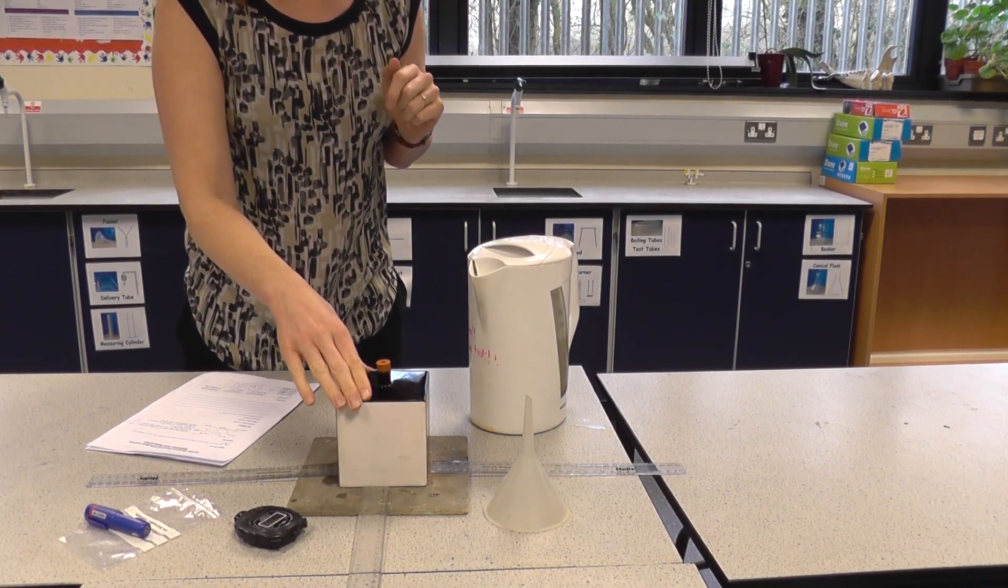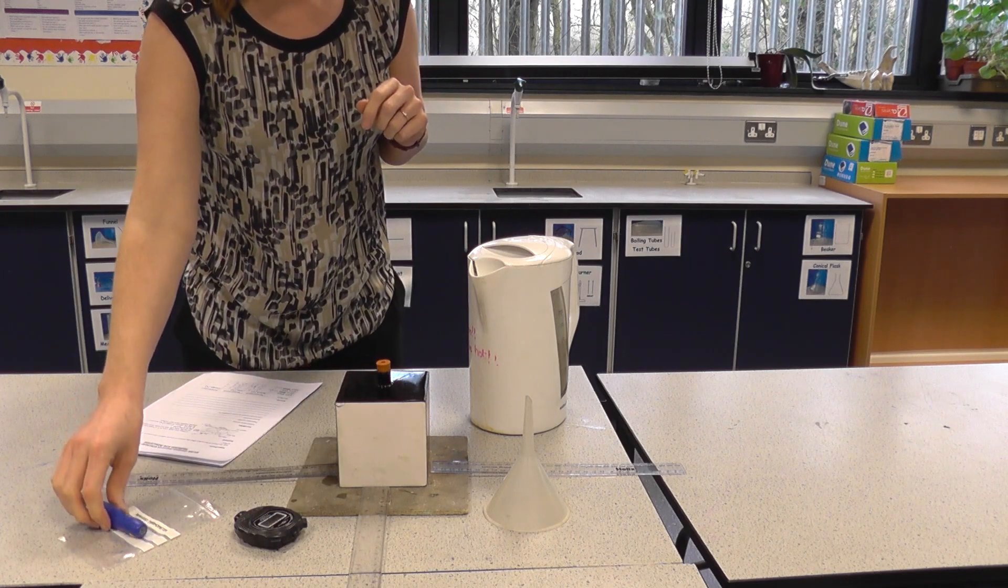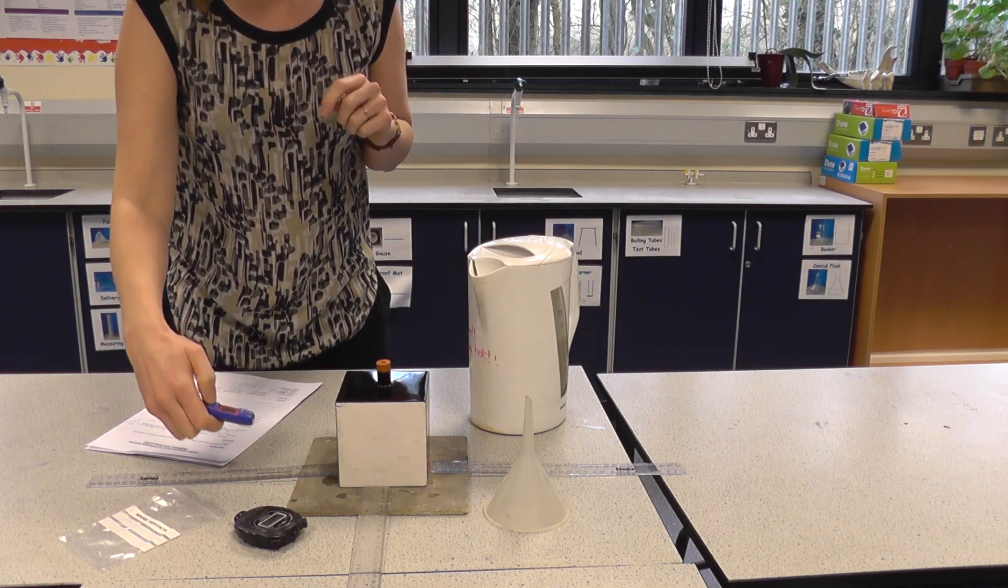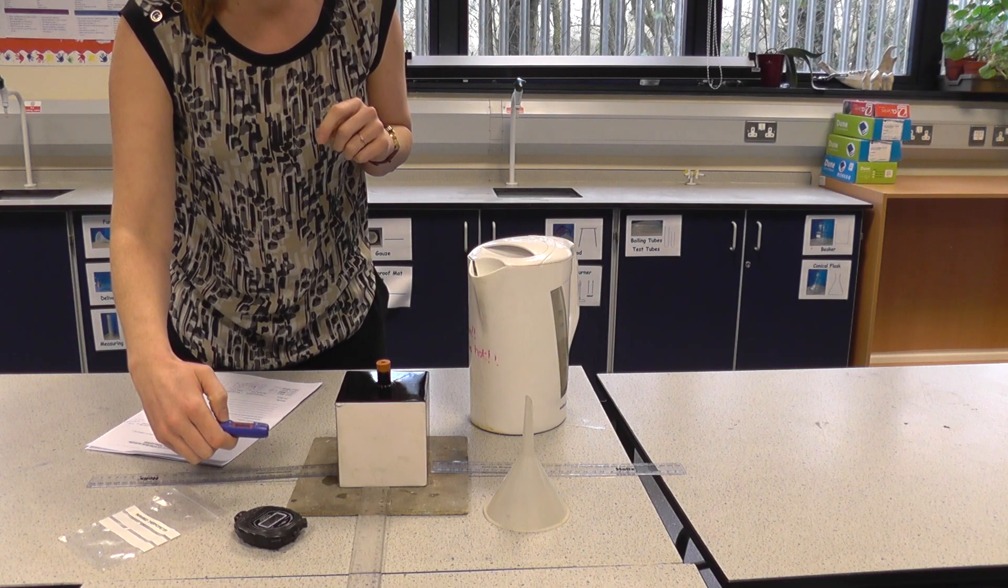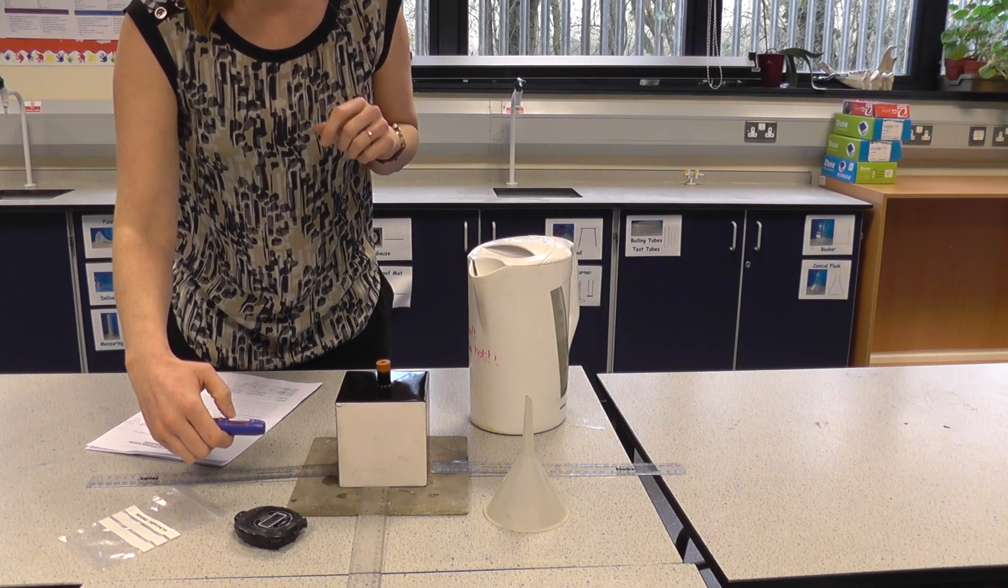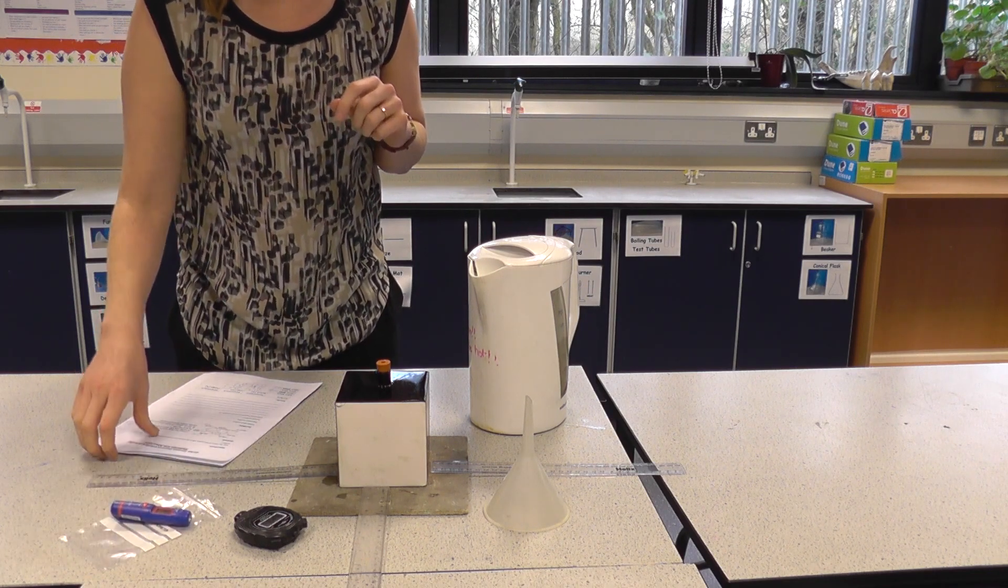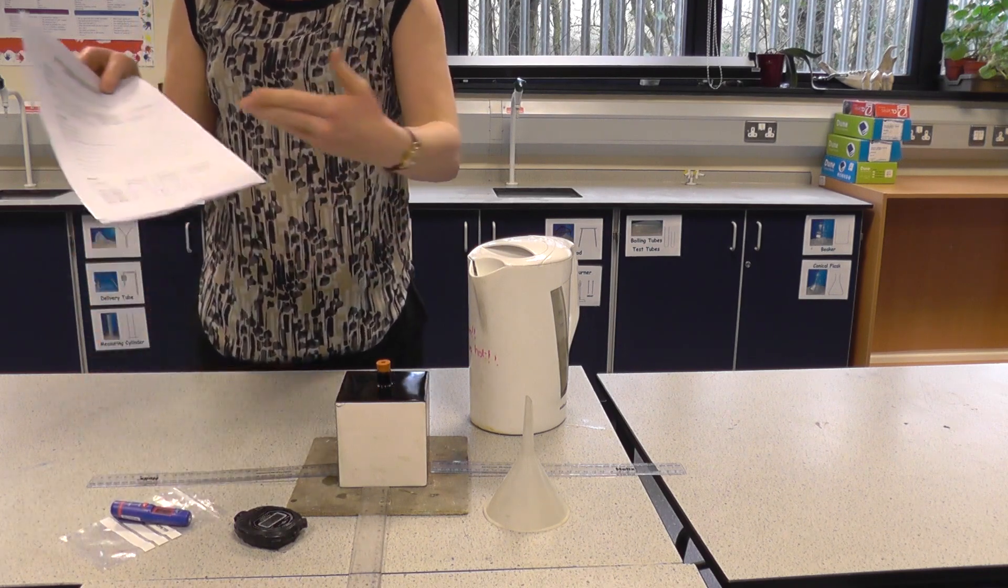First of all, place your Leslie cube on your heatproof mat, then record the temperature at 10 centimeters away with the infrared thermometer on each of the four sides, and record the information in the table on your student sheet.